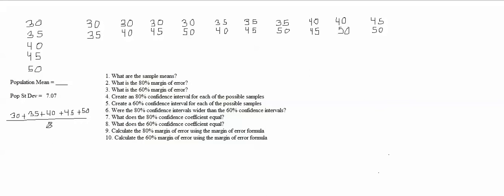Let's see what these equal. This is 75. Plus 40 is 115. Plus 45 is 160. Plus 50 is 210. So it should be 210 over 5.